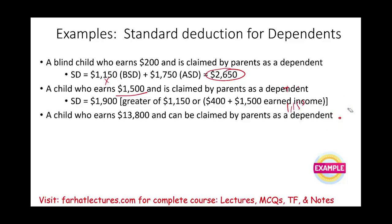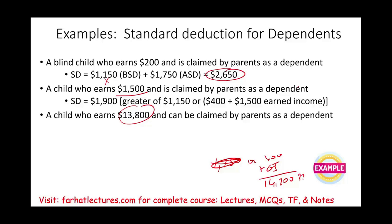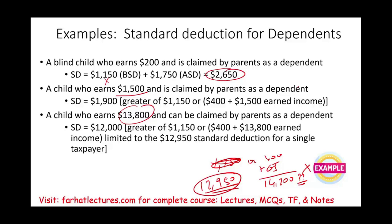Let's take a third example. A child earns $13,800 and is claimed as a dependent. We compare $1,150 vs. $400 plus earned income. Since their earned income is greater than $1,150, we take $400 plus $13,800, which gives $14,200. Can they take $14,200? Absolutely not — because the standard deduction for single is $12,950, and that will be their standard deduction. They can't take $14,200 because it exceeds the standard deduction cap for that year. In 2023 or 2024 that cap will be a different number, but the concept remains the same.